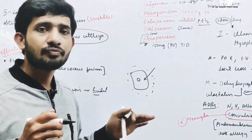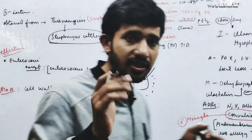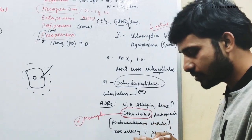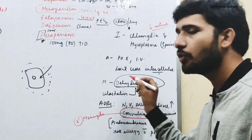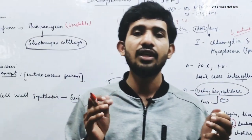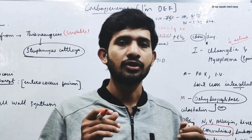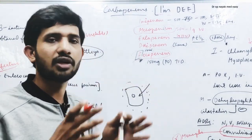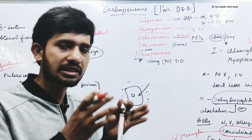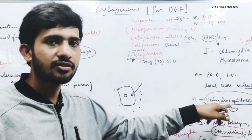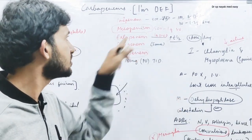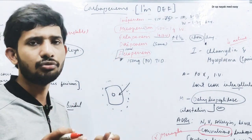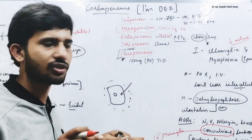Imipenem is metabolized by an enzyme called dehydropeptidase. This dehydropeptidase enzyme is present in the tubular cells of the nephron — in the proximal tubule, loop of Henle, and distal tubule — so imipenem is metabolized in the kidney and excreted through urine.